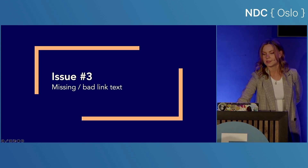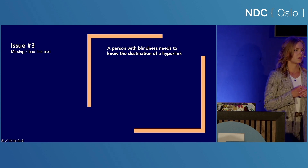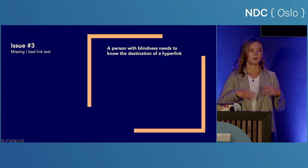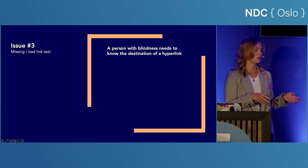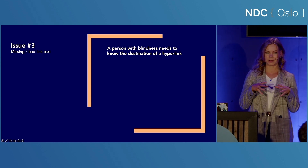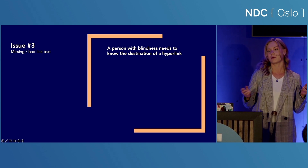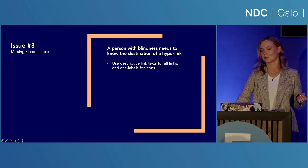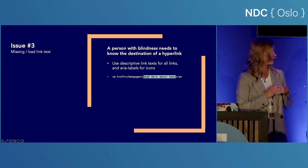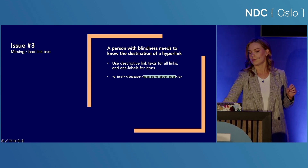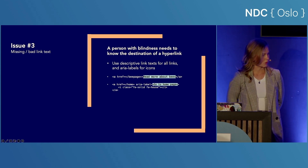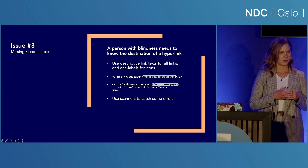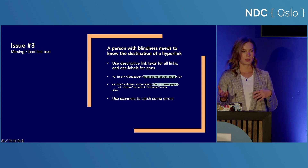Issue number three: missing and bad link text. A common mistake is missing or simply bad link text. Websites are mostly full of links, but developers have a tendency to put small icons or insufficient text like 'read more' as linked text. How is a person with blindness supposed to know what 'more' means without any context? Use descriptive link text for all links — for example, 'read more about bees' for an article about bees instead of just 'read more.' And use aria labels for icons, for example 'go to homepage' wrapped around a house icon. You can use scanners to catch many missing links, but a scanner might not distinguish between a good and a bad link text.